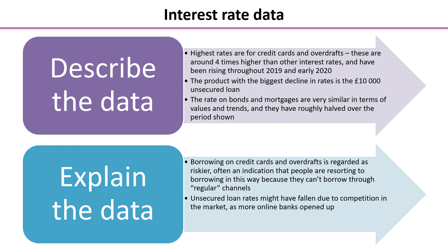Explaining the data is very different. Borrowing on credit cards and overdrafts is riskier — often an indication that people are resorting to borrowing this way because they can't borrow through regular channels. If your money runs out, it's riskier that you might not pay it back, so they charge a higher interest rate. Unsecured loan rates may have fallen due to competition in the market from more banks, financial institutions, and an increase in crowdfunding and peer-to-peer lending.